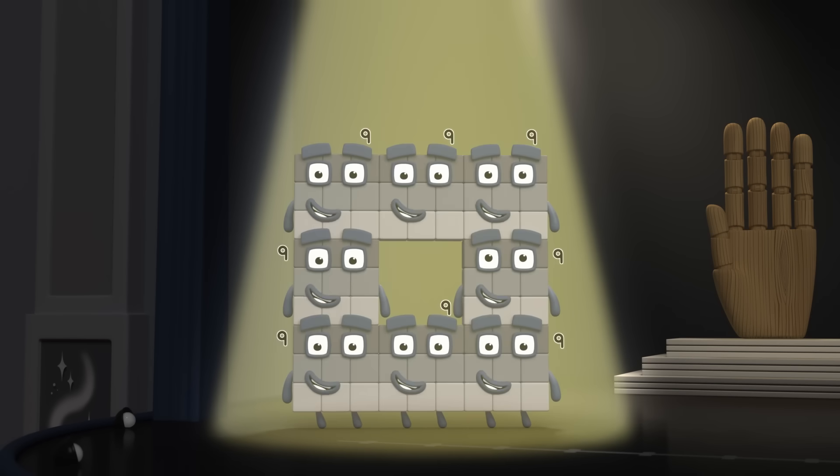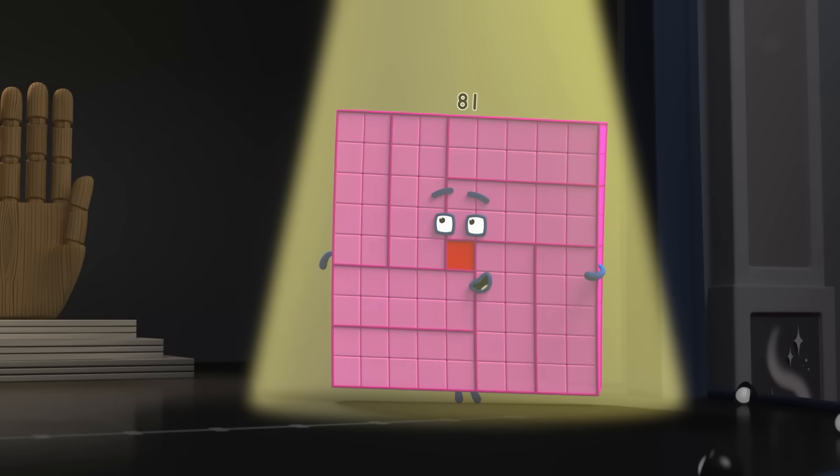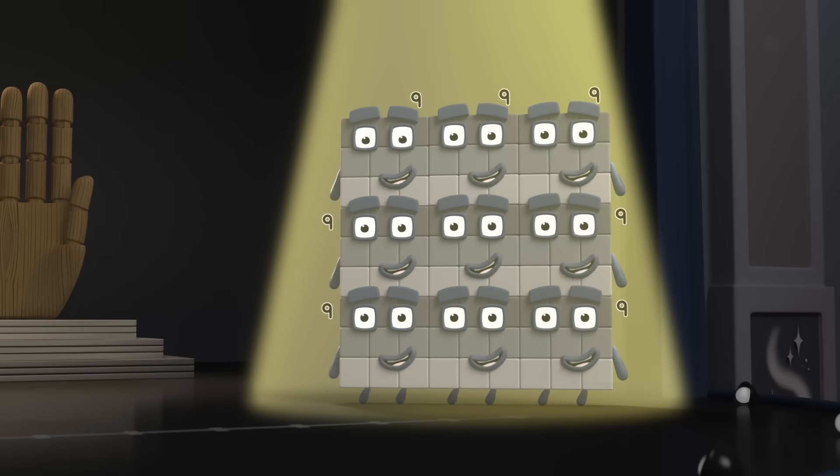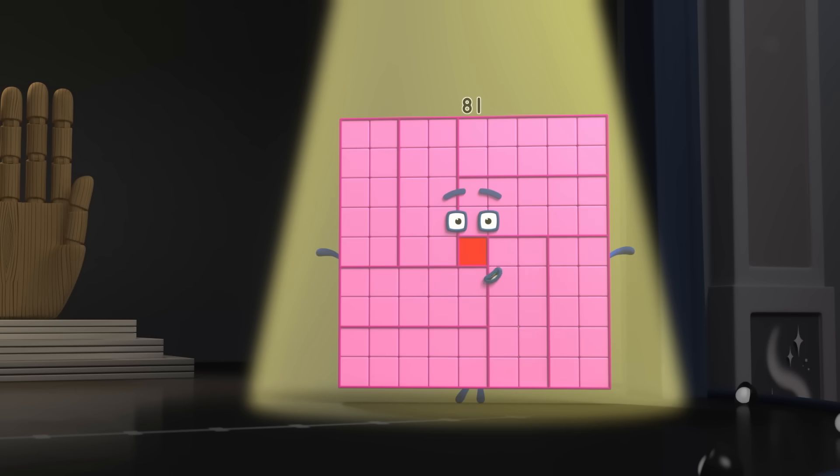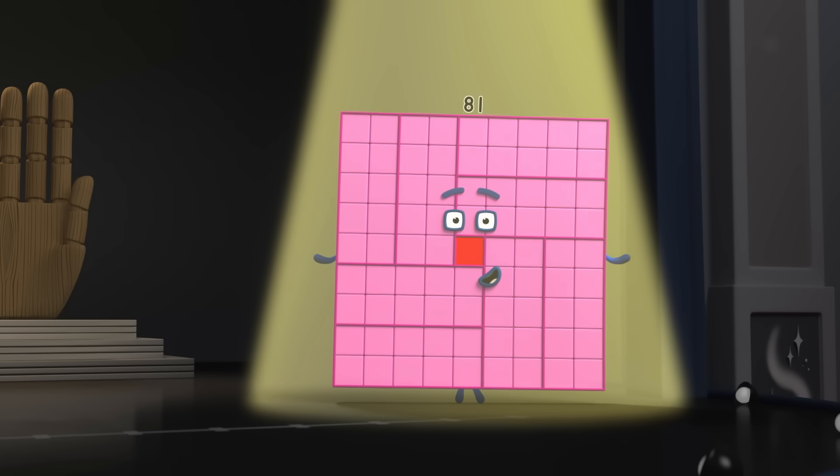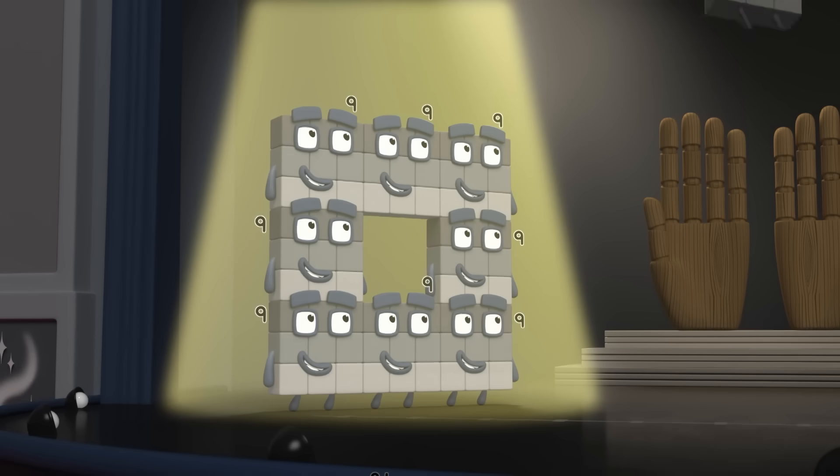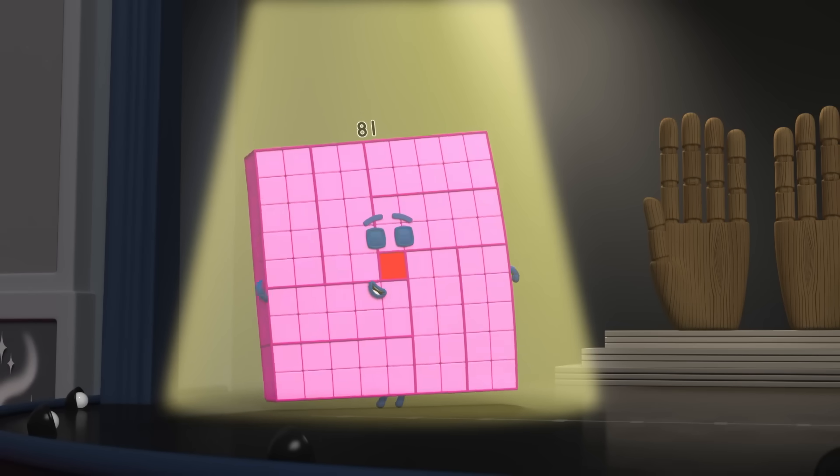Eight nines! And I'm eighty-one. I'm a square. Made of squares! Nine nines! Now watch closely. I'm a square. There! Over there!